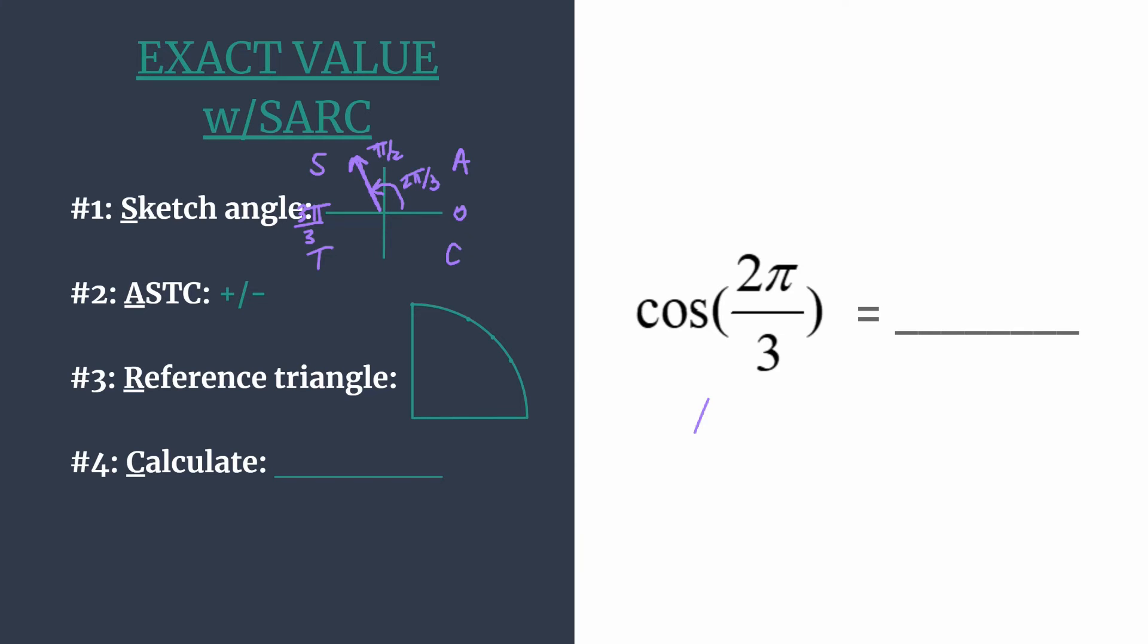Thus we know our answer, our exact value for cosine of 2π/3, must be negative. And I like to go ahead and mark that for my final answer.